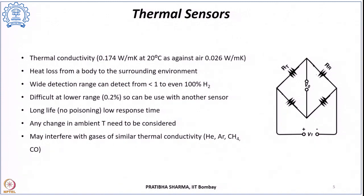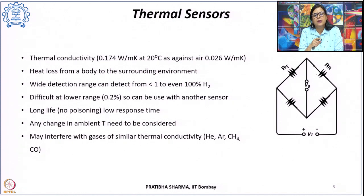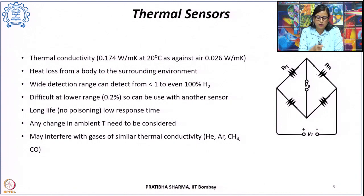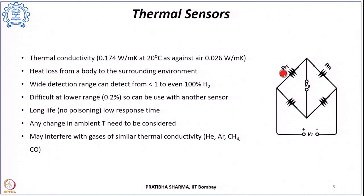If there is more hydrogen in the environment, heat dissipation increases because of hydrogen's higher thermal conductivity, and that correlation is used to find the hydrogen concentration. These thermal sensors typically consist of two resistors — a target gas resistor and a reference resistor — housed in a target cell and a reference cell respectively, connected in a Wheatstone bridge.